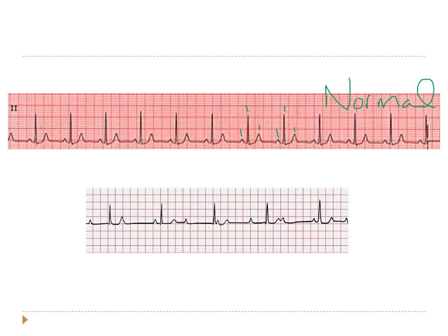Looking at an abnormal EKG below the normal one, we see P waves, QRS complexes, and T waves — but the P waves and QRS complexes are dissociated. In this person, the atrial signal from the SA node is not getting to the AV node. So the AV node can't hear anything coming from the SA node and is just sending the signal on its own at its own slower intrinsic rate, independent of the P waves. This is an example of heart block.